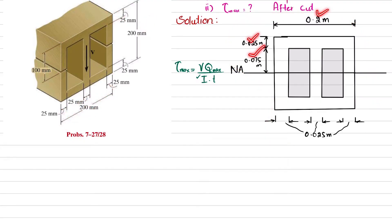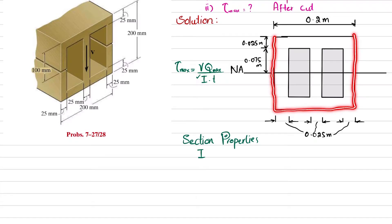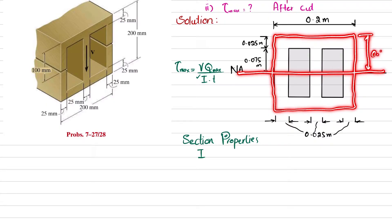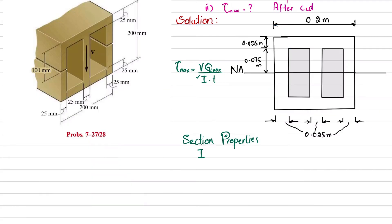For section properties, I will calculate the moment of inertia. We take the moment of inertia of the whole cross section about the neutral axis at mid-height (0.1 m), then subtract the hollow portions. So I = (1/12)·b·h³ for the outer rectangle minus the inner cutouts.